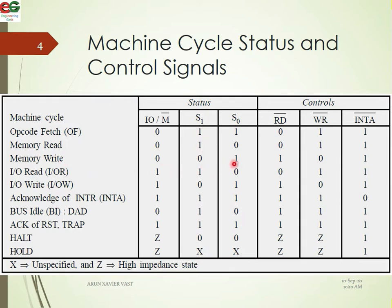When you write, S0 corresponds to a specific value. The same logic applies to IO Read. IO stands for Input/Output devices. For IO read, the IO/M bar section is 1, meaning input/output devices are selected. Read S1 is 1 and the Read pin is active low (0). The other section indicates active read.